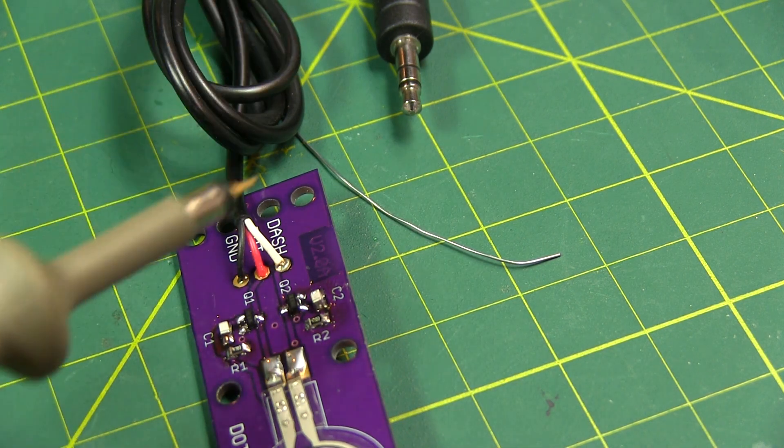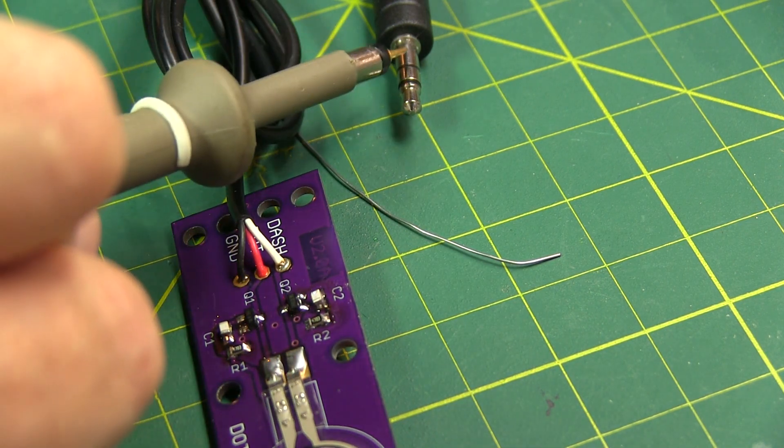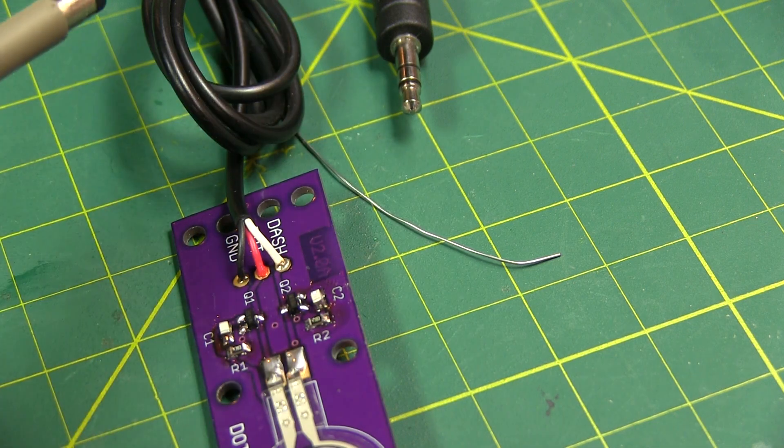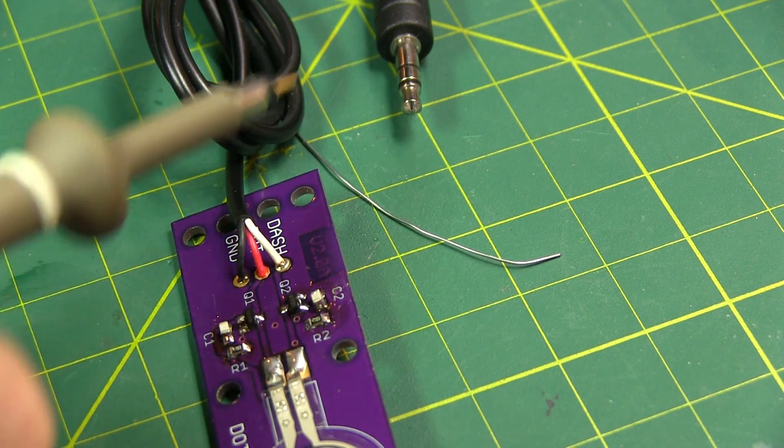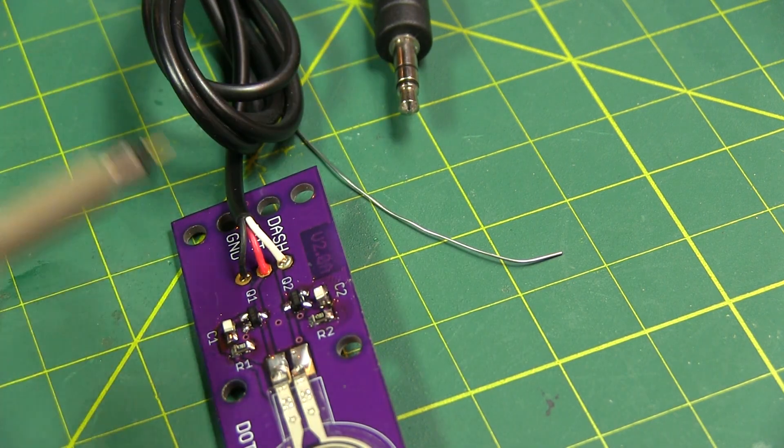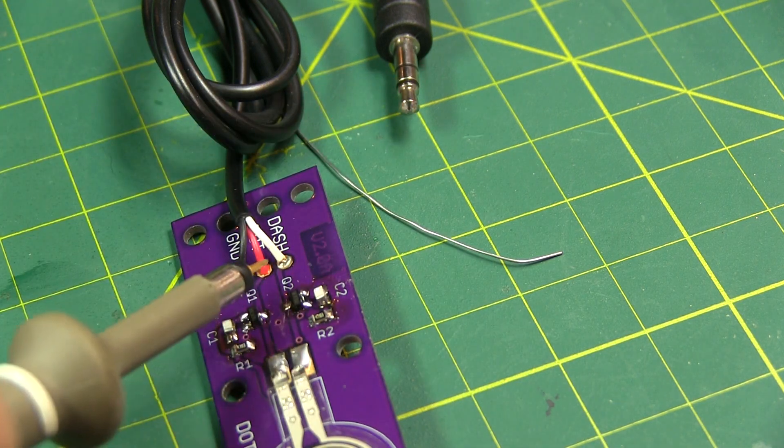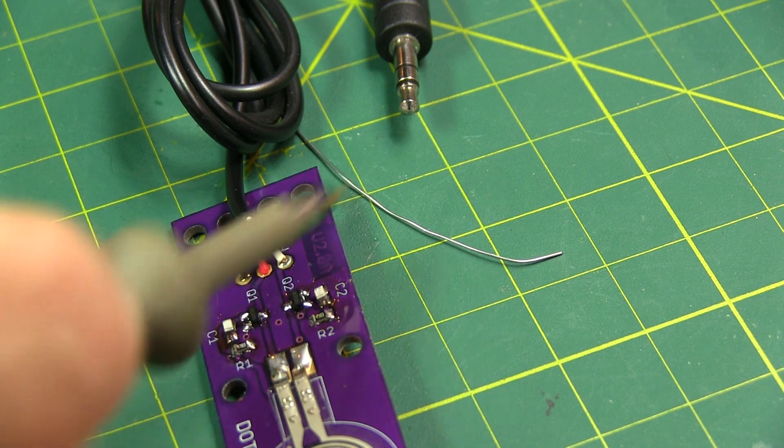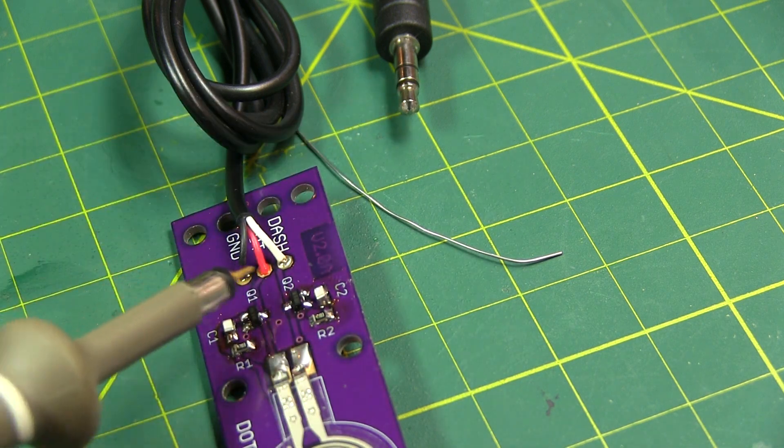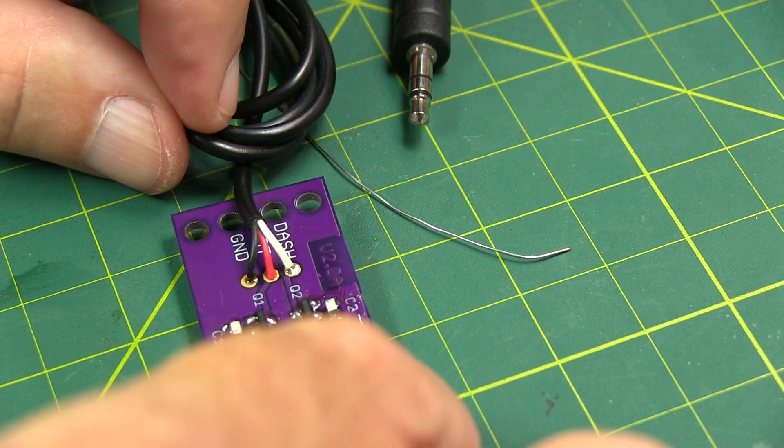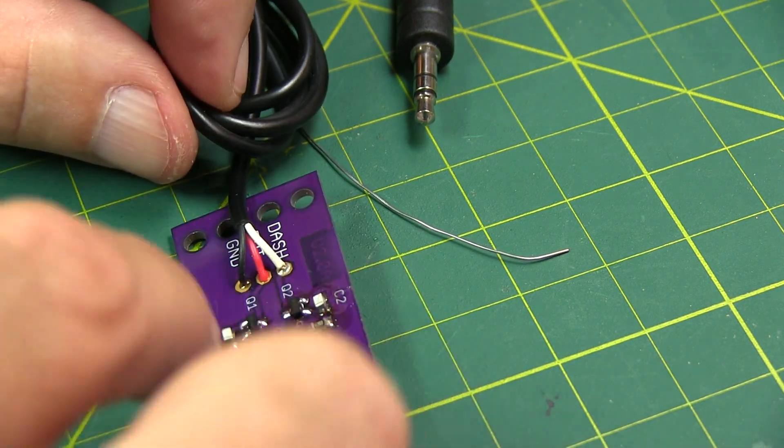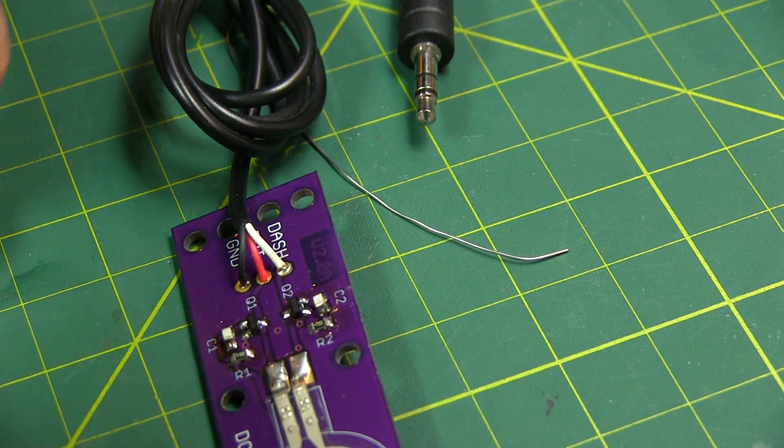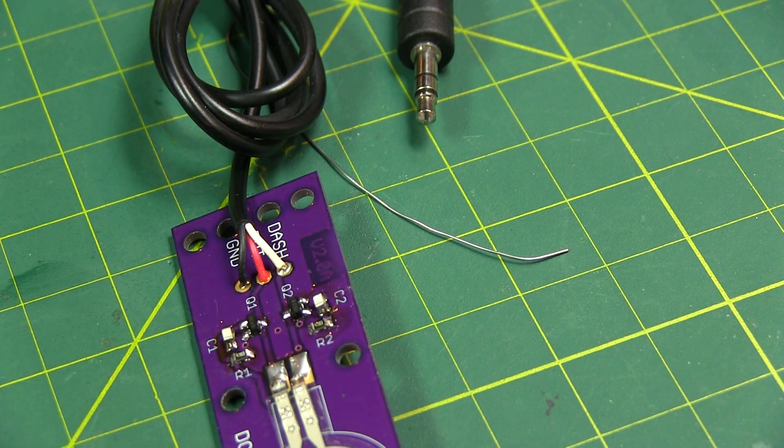After using an ohmmeter to check which colored lead went to the tip ring and sleeve, determined that the black is going to the sleeve. That's my ground. The tip, which is the dot, or dit if you will, is the red, and then white is the dash. So I soldered those up. And assembly is basically complete. I just need to clean the solder flux off of both sides of the board. And we'll do a little bit of test and then put the heat shrink on it.